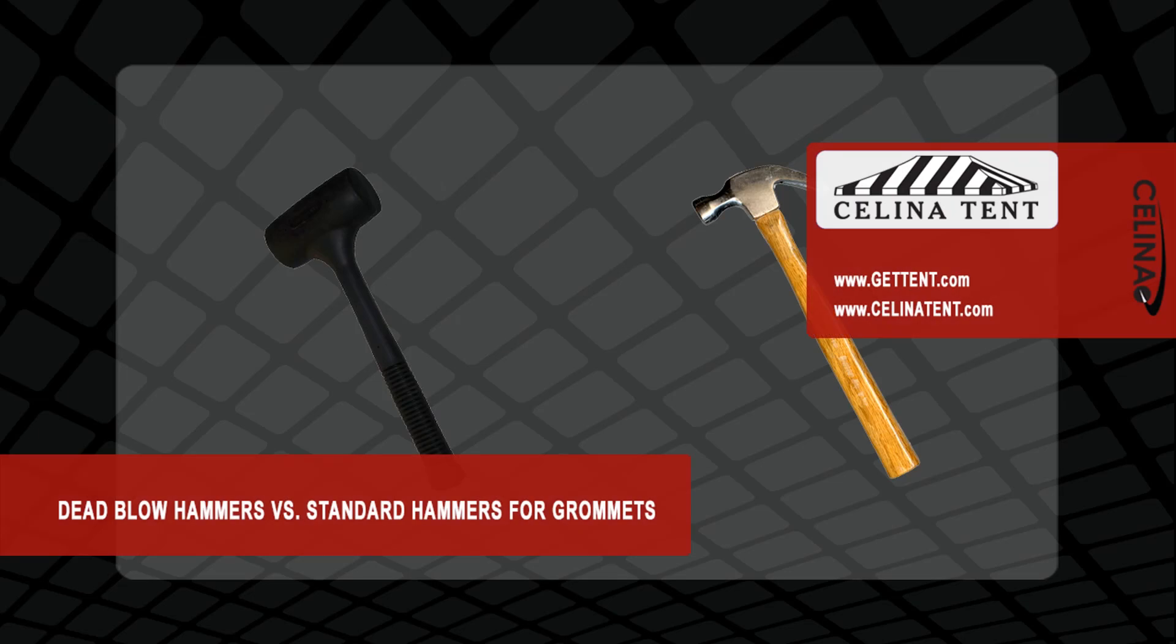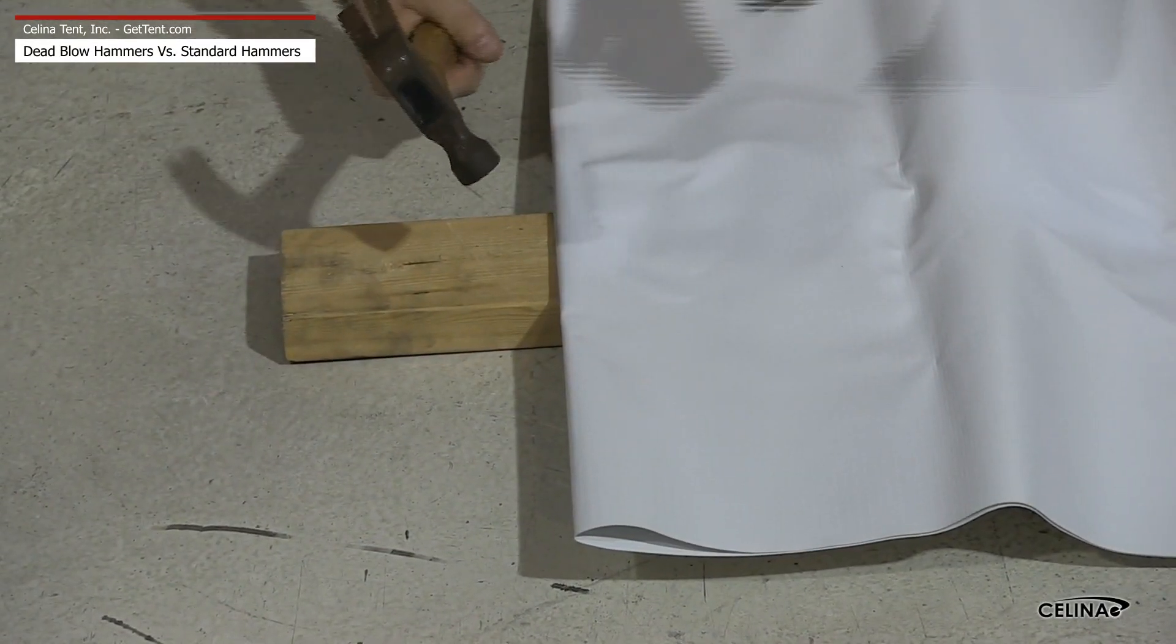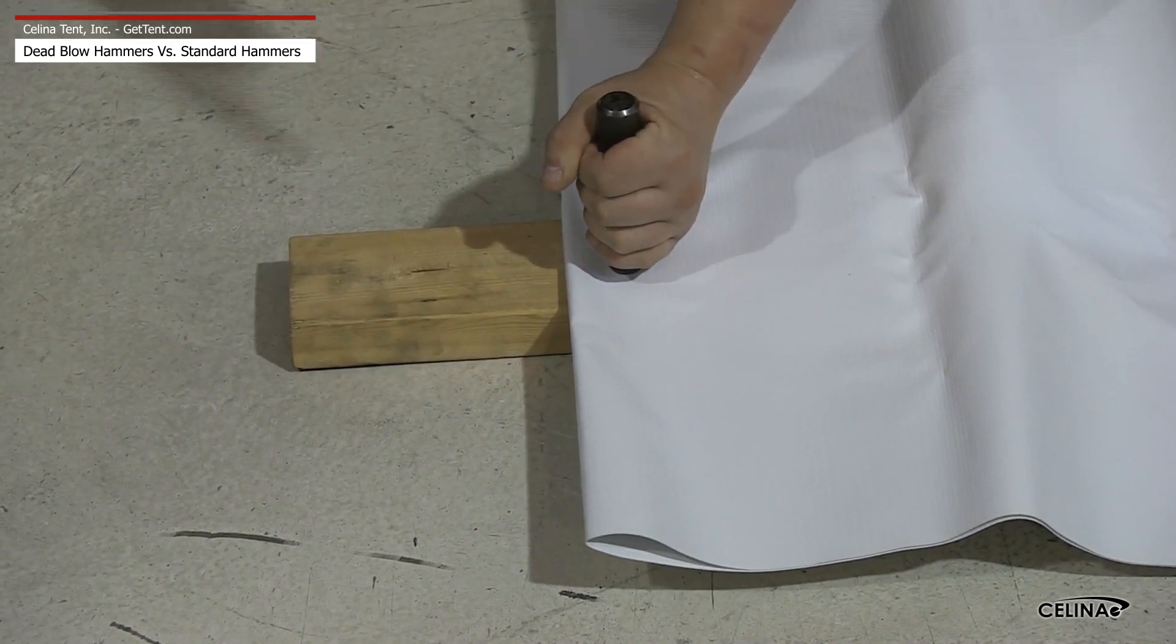In this video, we will cover the differences in using a dead blow hammer with the grommet kit as opposed to using a standard hammer. The hammer is used in conjunction with both the cutter and die setter included in the grommet kit.